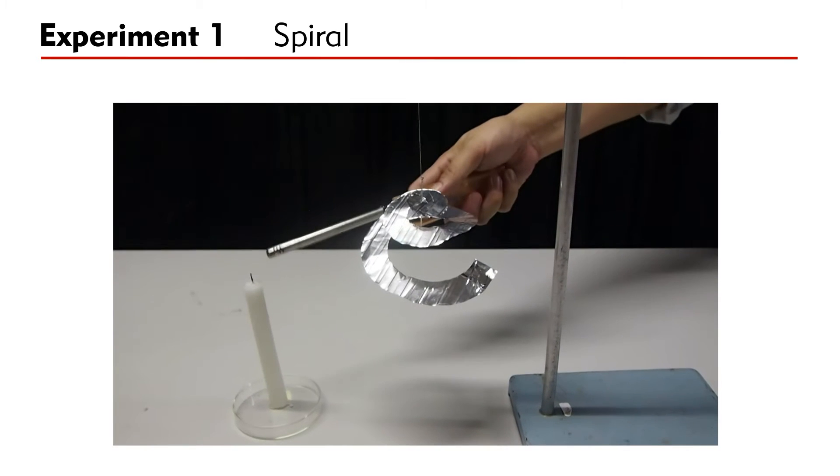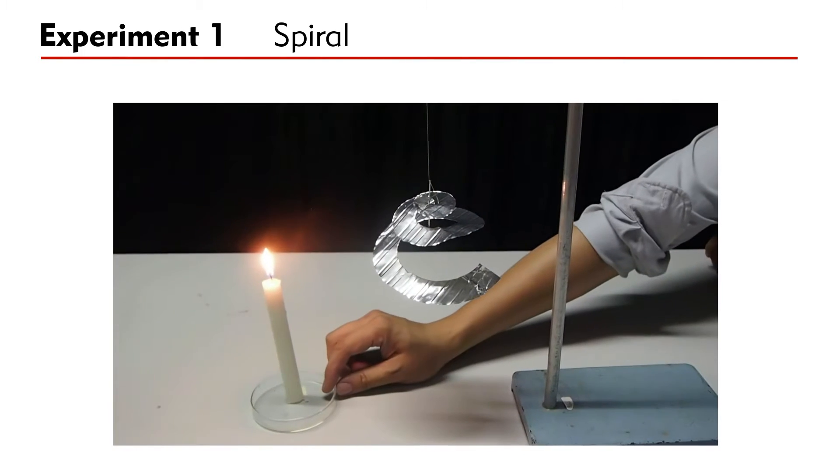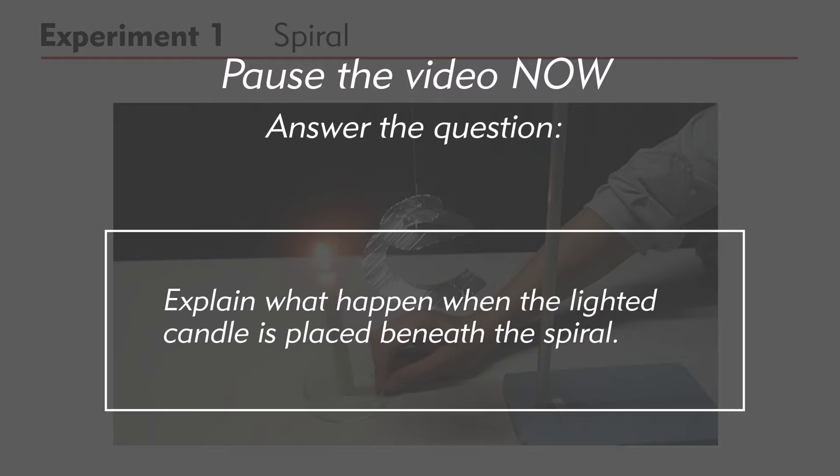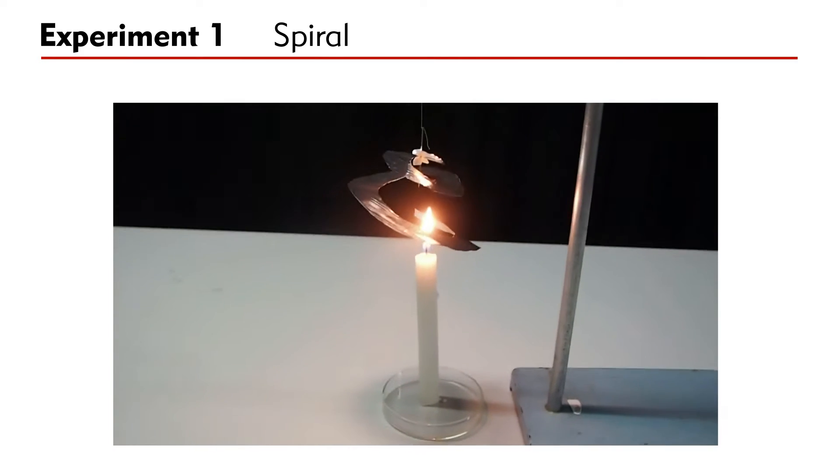Look at this experiment. A spiral is cut from a thin sheet of metal. It is then suspended using a thread above a candle. Can you explain what happens when the candle is lighted? Pause the video for a while and answer the question. The spiral will rotate continuously because the rising air from the flame pushes the spiral.